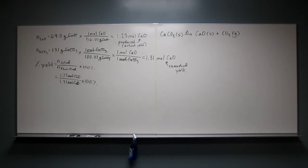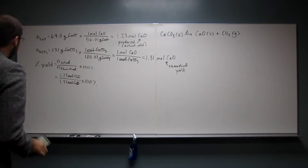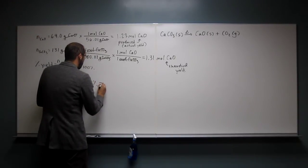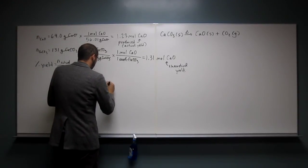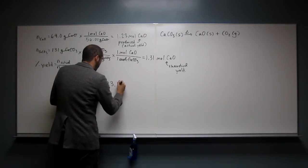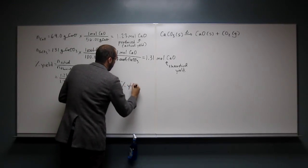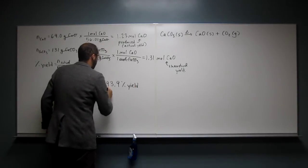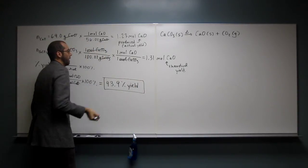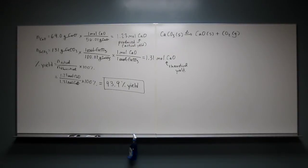And so 1.23 divided by 1.31 times 100%. And if we go to three significant figures, we get 93.9%. I think if we look on the paper, that answers that. Any questions about that one? No. Okay. Hopefully it makes sense.